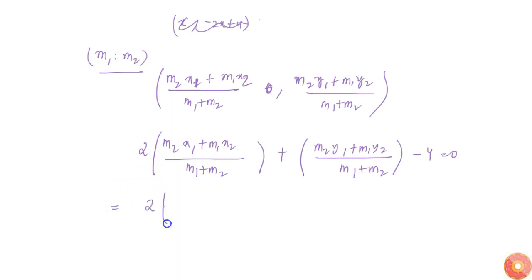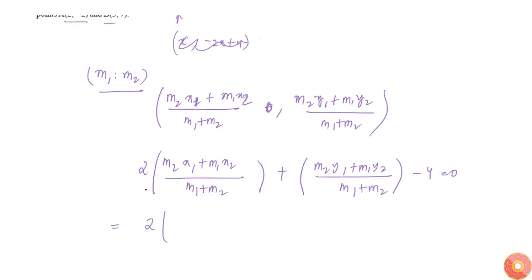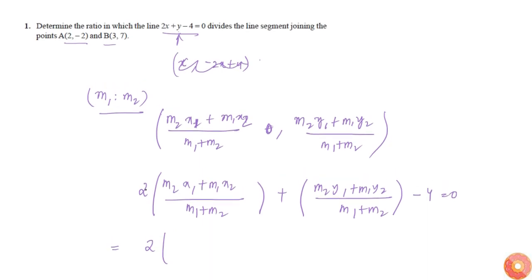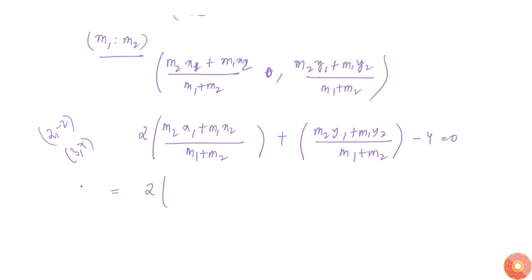From this I'll get 2m2 into... x1 is simply (2, -2) and (3, 7). So from this I'll get 2m2·x1, which is m2 into 2.